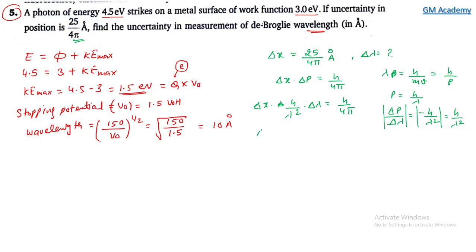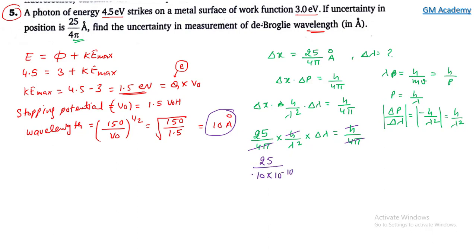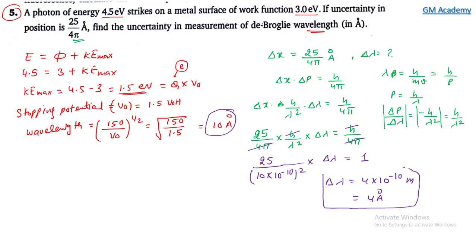Substituting Δx = 25/(4π) and λ = 10 angstrom = 10 × 10⁻¹⁰ m, the h and 4π terms cancel, giving Δλ = λ² / Δx = 4 × 10⁻¹⁰ meter, which is 4 angstrom. So the uncertainty in wavelength is 4 angstrom, and our correct answer is 4.